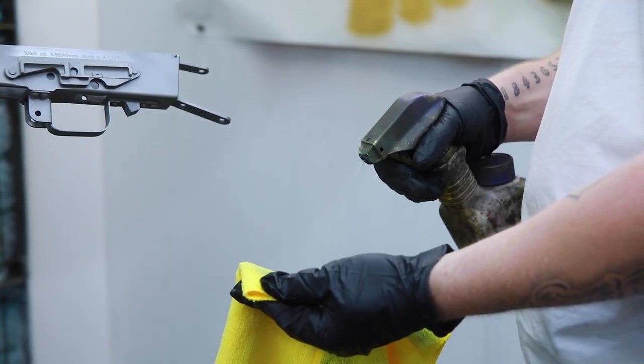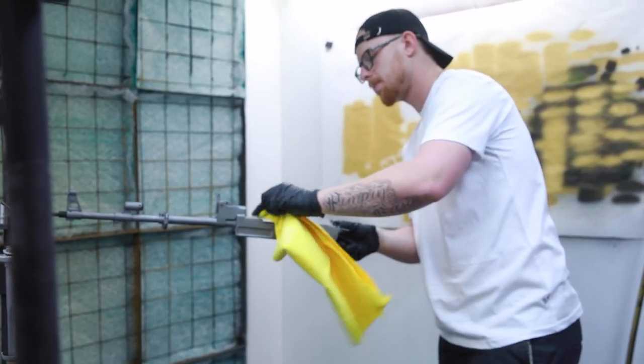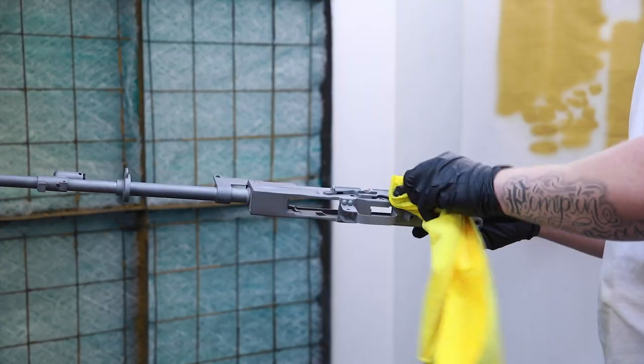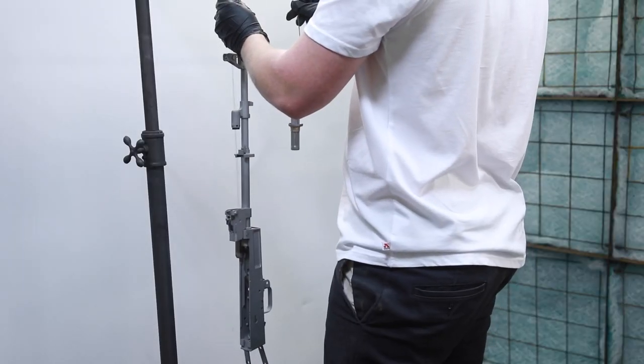Once all of the parts are hung properly, they are then examined once more before the coating is applied, to make sure that all of the parts have been cleaned, prepped correctly, and are ready for a successful application of Cerakote.